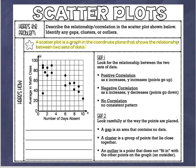In this example, the x value is the number of days absent and the y value is the average in math class. Each point represents a different student. For example, this point here is a student absent for six days with a math average of 70, and this one is a student absent for ten days with an average of about 24. It's just a relationship between two sets of data.